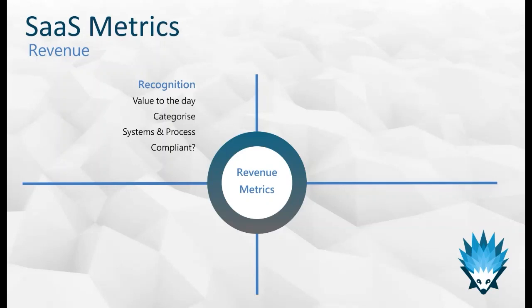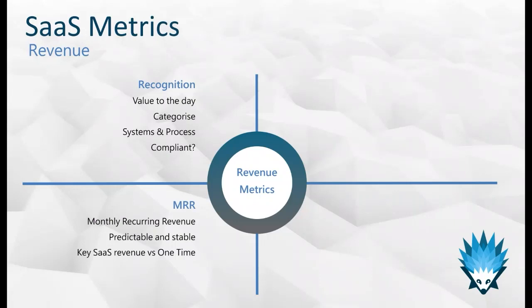The second point is how you're going to categorize your revenue — there are many ways: by product, by type of customer, by geography, and by how they're actually consuming it. The third point on revenue recognition is ensuring you have the systems and processes in place to handle it accurately. The worst place to be is having huge amounts of sales coming through but not being able to treat the revenue accordingly and get the right metrics out of it. And as always, ensure it's compliant — speak with your advisors and auditors.